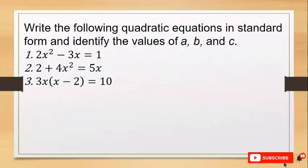Now, write the following quadratic equations in standard form and identify the values of a, b, c. Number 1: 2x² minus 3x equals 1. Number 2: 2 plus 4x² equals 5x. Number 3: 3x times the quantity of x minus 2 equals 10. You are given 3 minutes to answer this task.